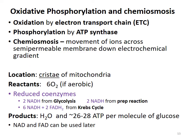The final stage of cellular respiration is oxidative phosphorylation and chemiosmosis. We have oxidation by the electron transport chain — remember that oxidation is loss of electrons — and then phosphorylation by ATP synthase, where phosphorylation means adding a phosphate group to a molecule. Chemiosmosis is the movement of ions across a semi-permeable membrane down an electrochemical gradient. This happens on the cristae — the inner membrane of the mitochondria.